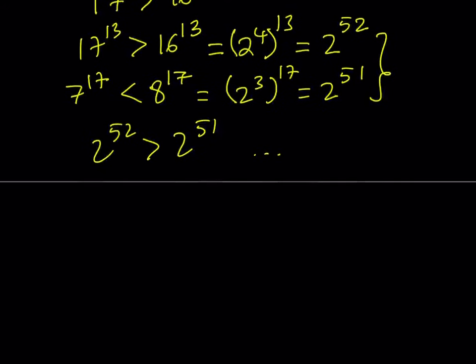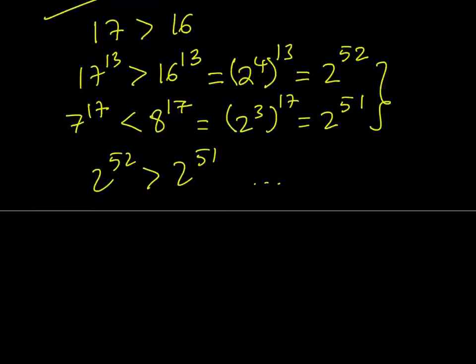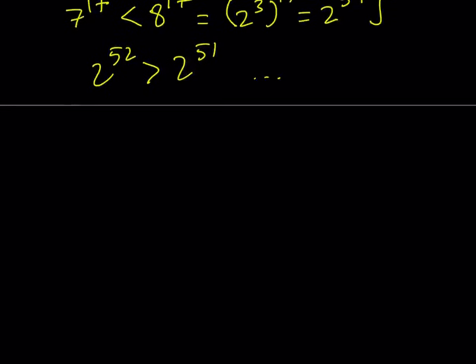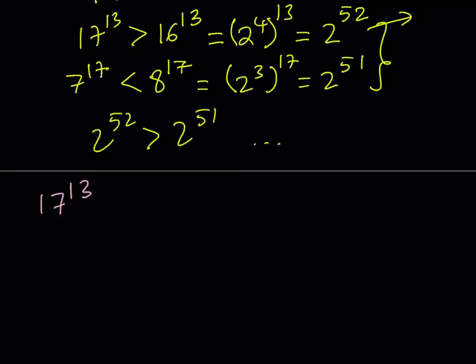Now we can start with the first chain of inequalities. One of our numbers, 17 to the power 13, is even greater than 2 to the 52nd. So we're going to start with 17 to the power 13 and we know that it is greater than 2 to the power 52.